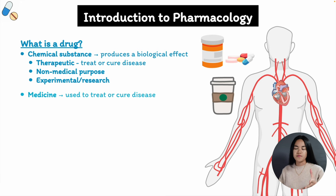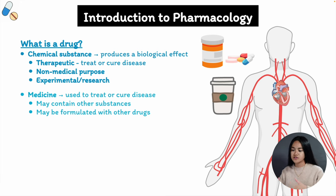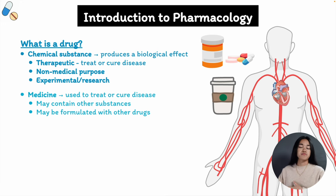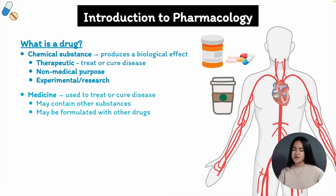A lot of medicines actually contain more than one active ingredient, so there will be a lot of other things in a therapeutic formulation. It may contain other substances such as stabilizers or solvents. For example, a brand of medication used to treat high blood pressure might contain two different types of blood pressure lowering drugs in a single pill.